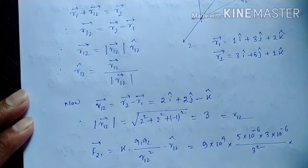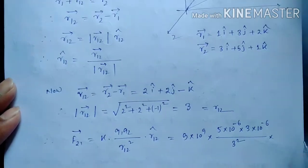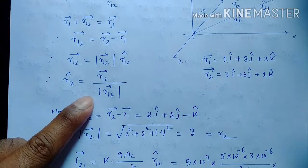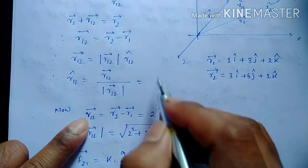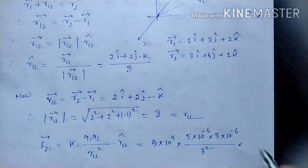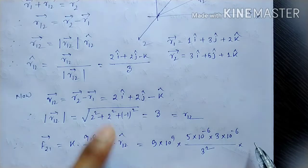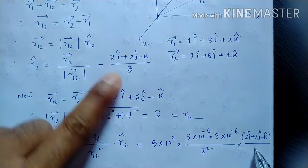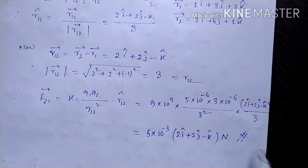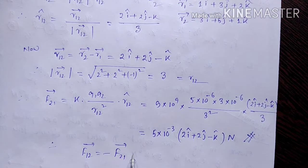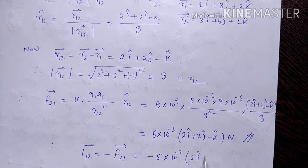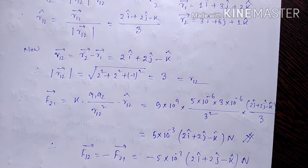r̂12 means vector r12 divided by its magnitude 3, which gives (2î + 2ĵ − k̂) / 3. Simplifying the full expression, we get F12 = −F21, therefore F12 = −5 × 10⁻³ (2î + 2ĵ − k̂) Newton. This is the final answer.